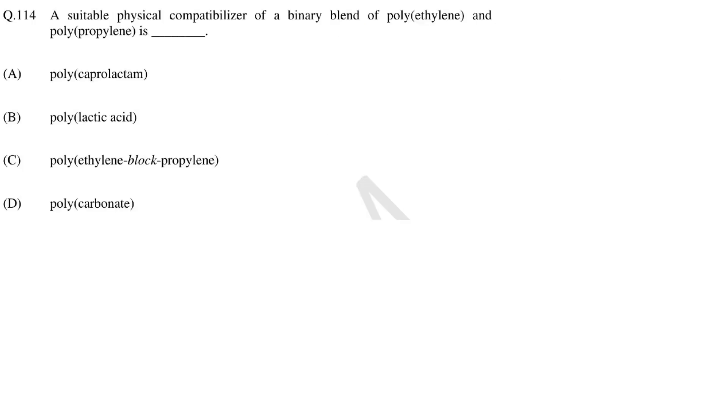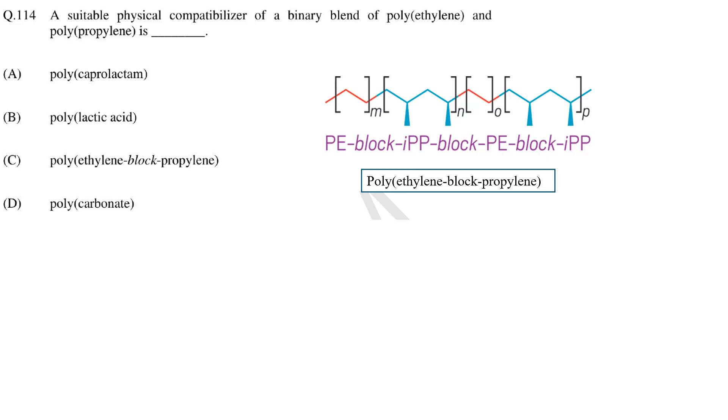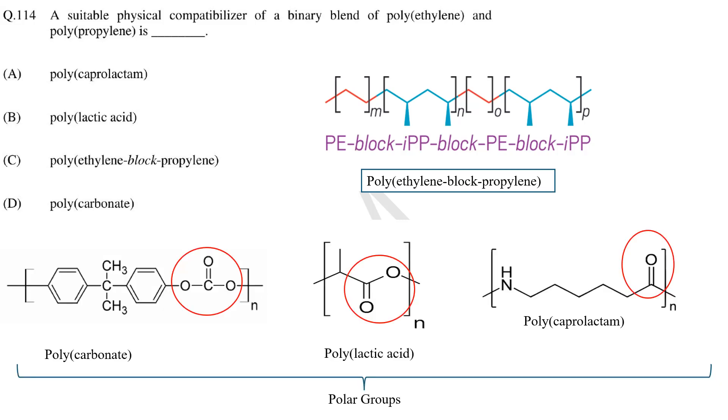In this question identify the compatibilizer for polyethylene and polypropylene blend. We know that polyethylene and polypropylene both are polyolefin polymers and both are hydrophobic and non-polar and they do not form miscible blend because they are crystallizable polymer and thermodynamically they form separate crystalline domains. So to form a miscible blend a compatibilizer is added which shows compatibility to both domains. Among the given options except polyethylene block propylene all other options are polar polymers which will not have compatibility with the non-polar polymers like polyethylene and polypropylene. Thus these cannot be used as compatibilizer. So the only option that can be correct is C.